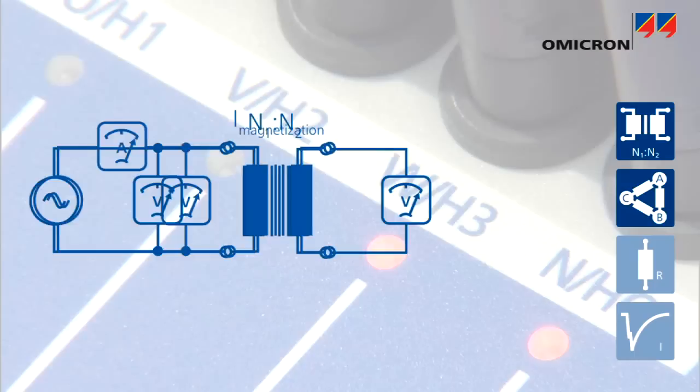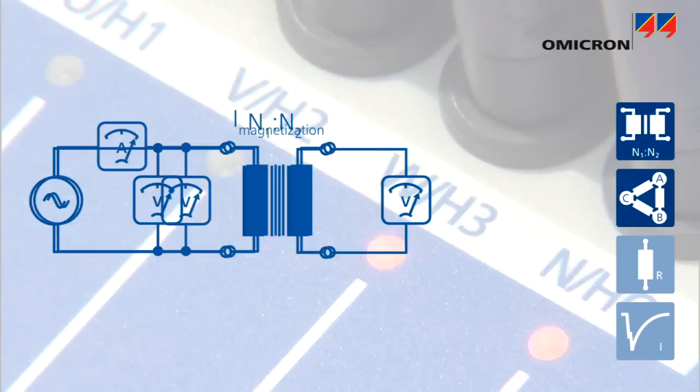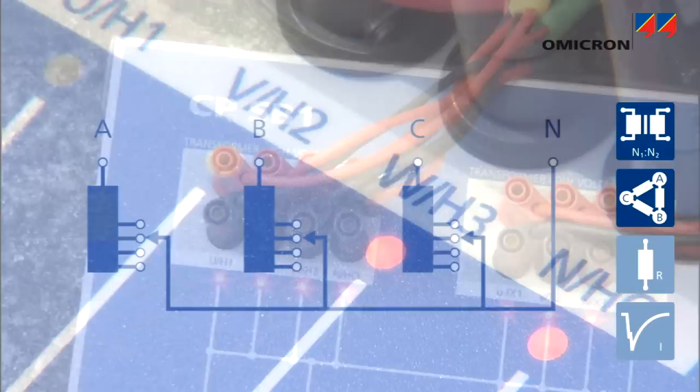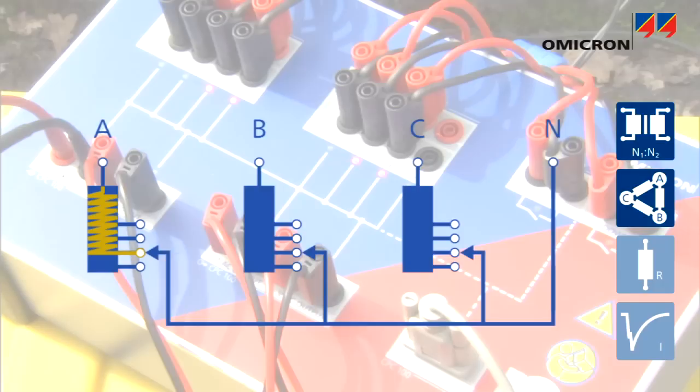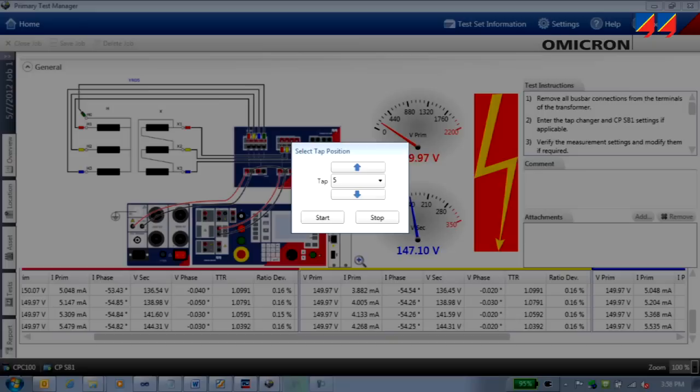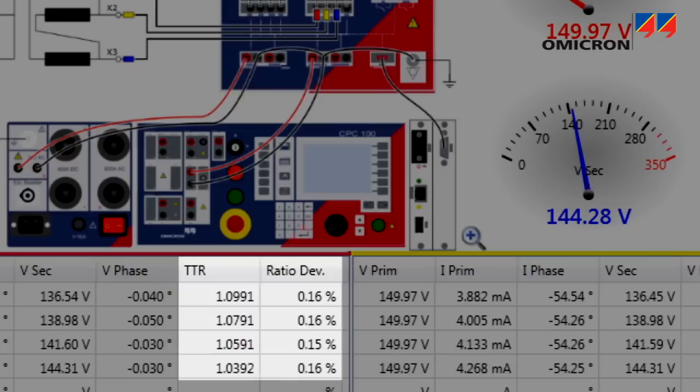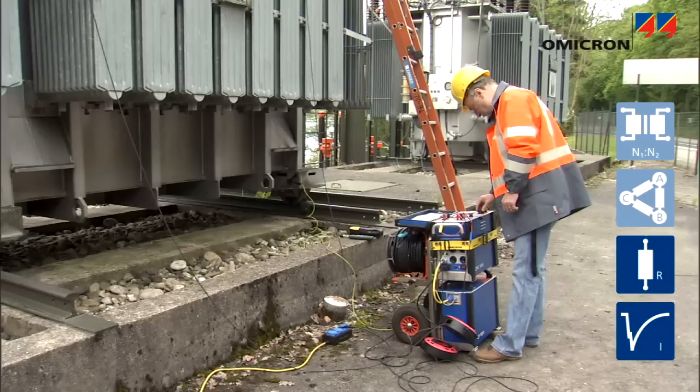When measuring ratio and magnetization current in each tap position, the CPSB1 switchbox automatically switches to the different phases, minimizing tap changer operation. After measuring the ratio for all phases in one tap position, it operates the onload tap changer and measures the values for the next tap. The CPC compares the results to the ratio specified for each tap and displays the deviations.